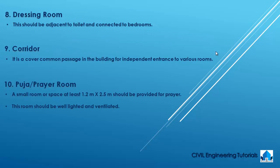The dressing room should be adjacent to the toilet and connected to bedrooms. A corridor is a common passage in the building for independent entrance to various rooms. A pooja or prayer room — a small room or space of at least 1.2 meters by 2.5 meters — should be provided for prayer. This room should be well lighted and ventilated.